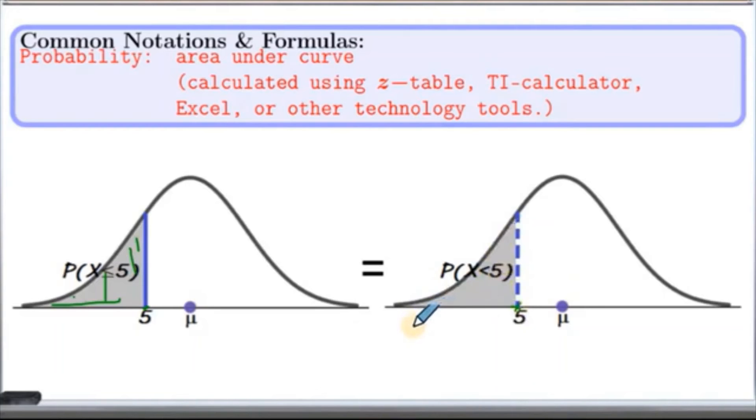If you can see here, in normal distribution, probability of x less than or equal to 5 or probability of x less than 5 are the same. In general, probabilities are the same whether we have strict inequalities or not.